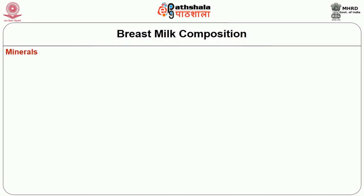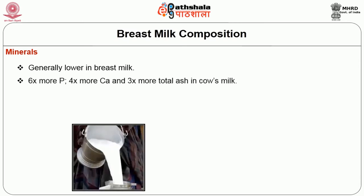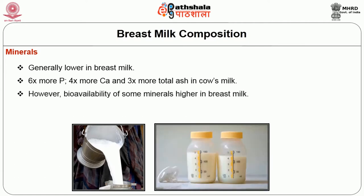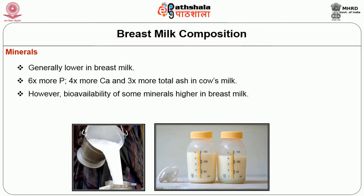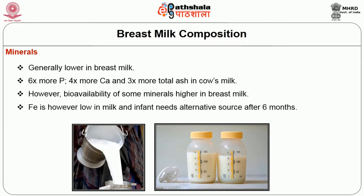When talking about minerals, they are generally lower in breast milk when compared to cow's milk and buffalo's milk — which have 6 times more phosphorus, 4 times more calcium, and 3 times more total ash than breast milk. The renal solute load is higher in cow's and buffalo's milk. However, the bioavailability of some minerals is higher in breast milk, such as iron, even though breast milk is low in iron overall. The infant needs supplementary foods for iron needs.